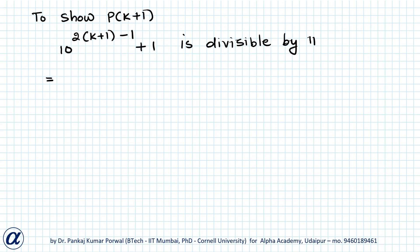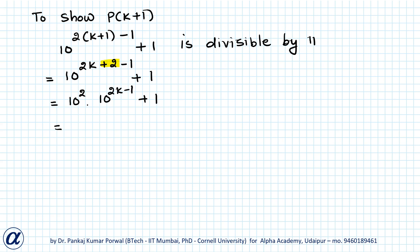I can write this as 10 to the power 2k plus 2 minus 1 plus 1, and I can take the power 2 out to get 10 to the power 2 into 10 to the power 2k minus 1 plus 1.